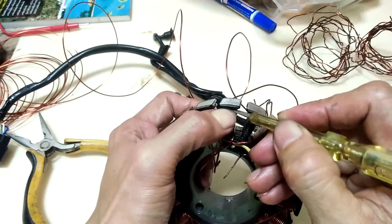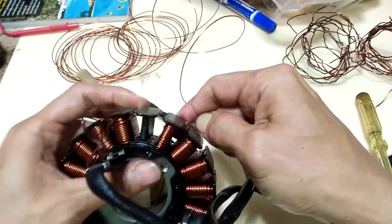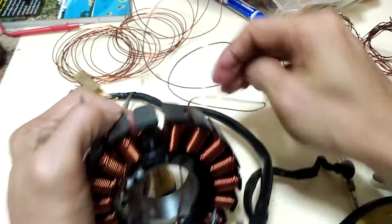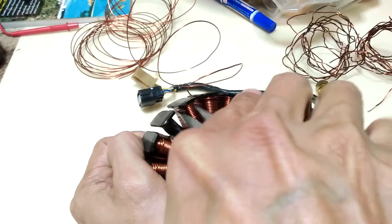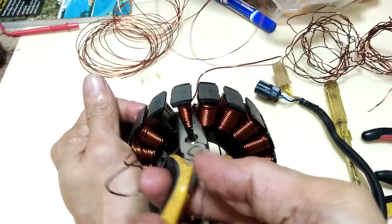So basically I just manually rewind new wires to replace the old ones. I follow the original winding orientation which is counterclockwise. I wind 42 turns per pole in three layers.